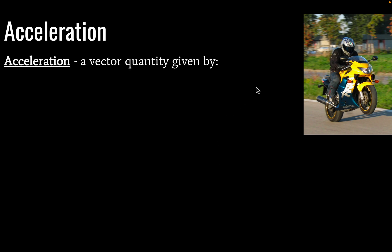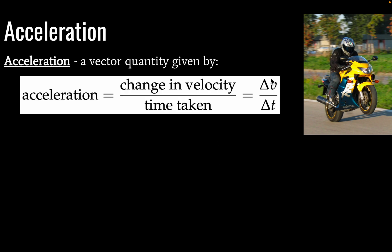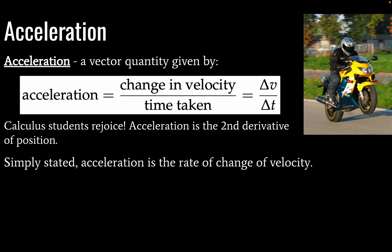Okay, so next we have acceleration, and acceleration is a vector quantity given by a change in velocity divided by time taken. And the direction of acceleration is going to equal the direction given by our change in velocity. Okay, so calculus students will be happy. We've now hit the second derivative of position versus time.